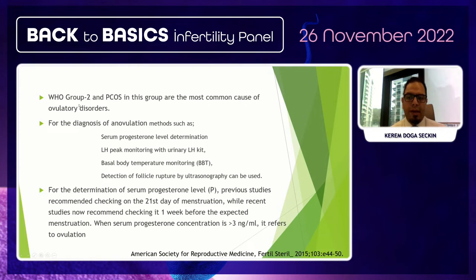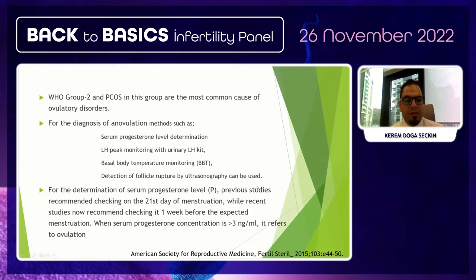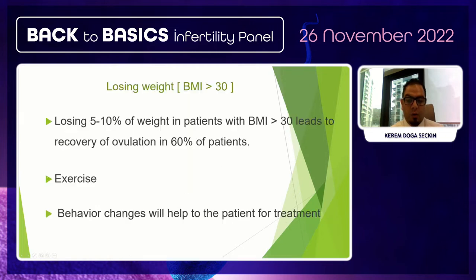Ovulation can be diagnosed using serum progesterone levels and LH peak monitoring with urinary LH kits. Serum progesterone of 3 ng/mL or higher can confirm ovulation. Basal body temperature monitoring is no longer commonly used, and follicular rupture detection by ultrasound can be used but is not simple.